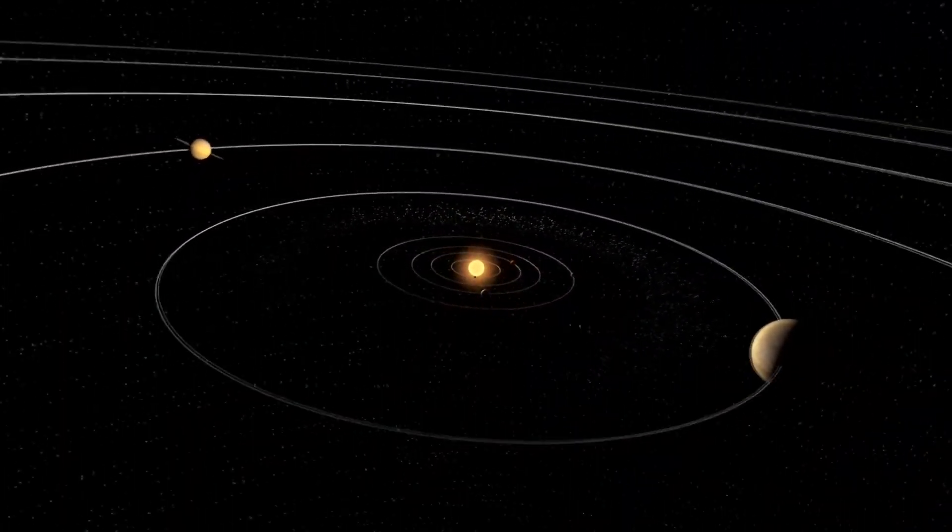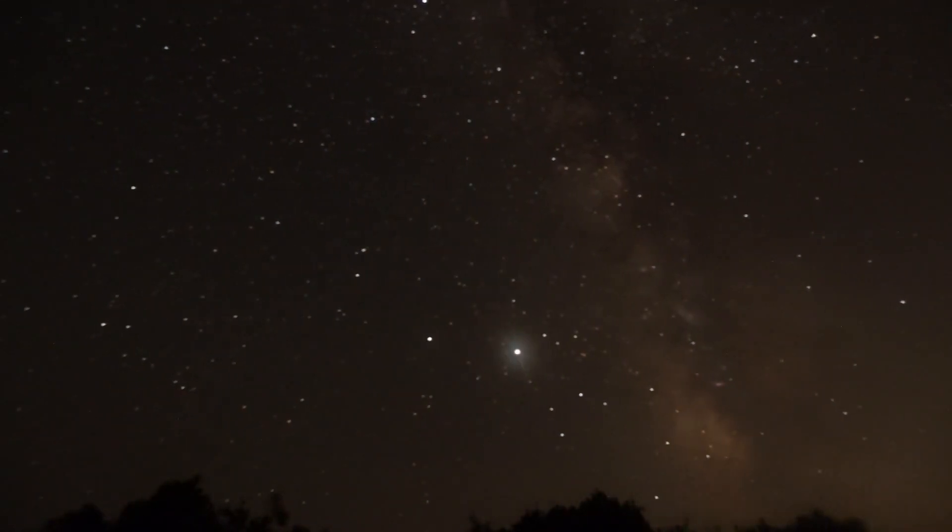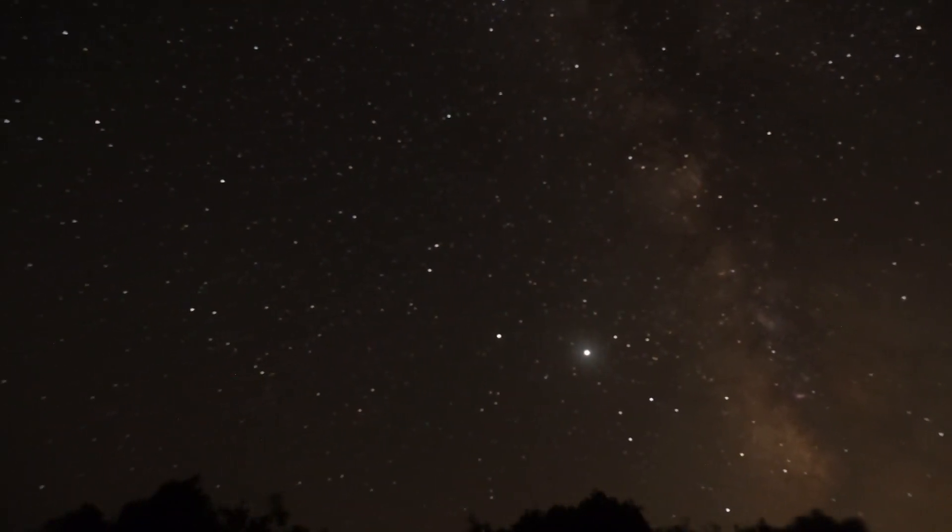Our closest interstellar neighbor, the triple star system of Alpha Centauri, is four and a half years away at this pace.